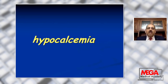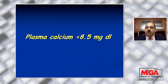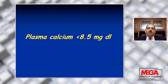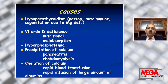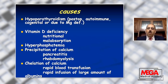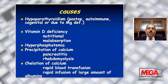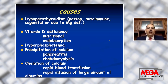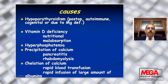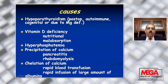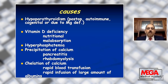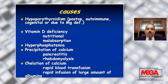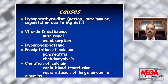Hypocalcemia means plasma calcium level below 8.5 milligram per deciliter. The causes include hypoparathyroidism — either postoperative after surgical removal of the parathyroid gland, or due to autoimmune disease, congenital disease, or magnesium deficiency. Also, vitamin D deficiency in case of nutritional or malabsorption syndrome, hyperphosphatemia, precipitation of calcium in pancreatitis or rhabdomyolysis, and chelation of calcium after rapid blood transfusion or rapid infusion of large amounts of albumin.